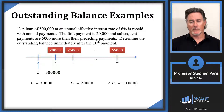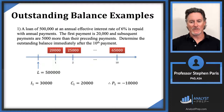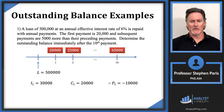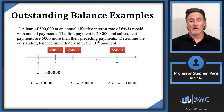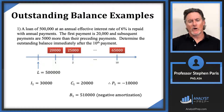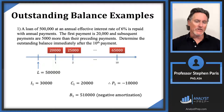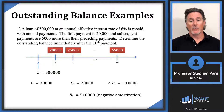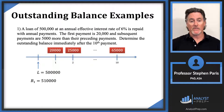If you subtract the interest from the payment, you get negative $10,000 — the amount of principal repaid is negative. The lender will add that deficiency to the loan balance, so your balance at time 1 is actually $510,000. This is called negative amortization: your payment was not enough to cover interest, so the difference is rolled into your balance, causing it to go up.